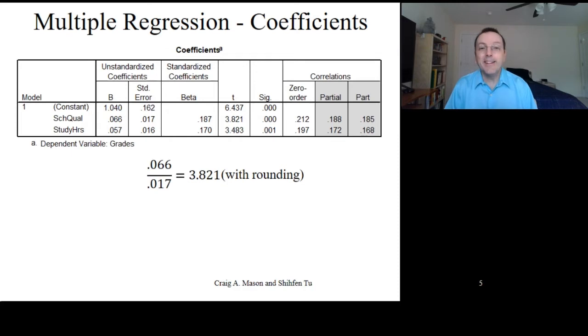Yes, I know if you're following along at home and divided 0.066 by 0.017, you get a slightly different number, but that's due to both 0.066 and 0.017 being rounded to three decimal places. If you use non-rounded values, you get exactly 3.821. Trust me, okay? And we see then that the t-test for the school quality effect is in fact equal to 3.821.